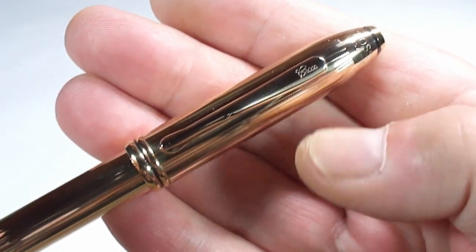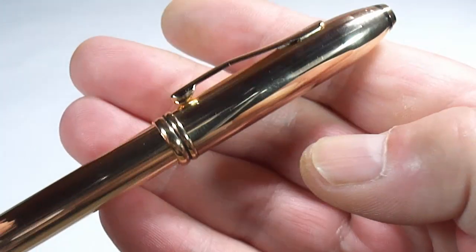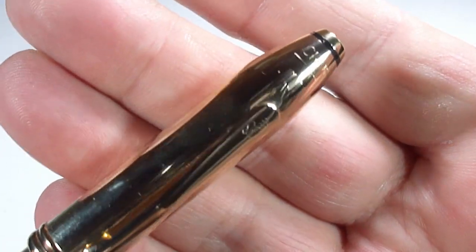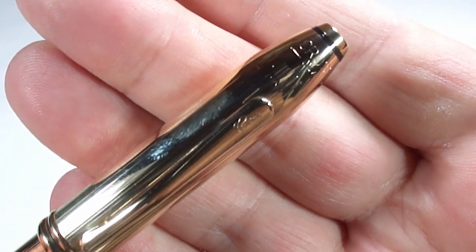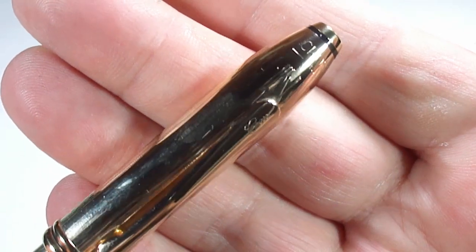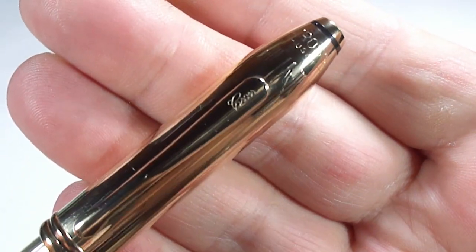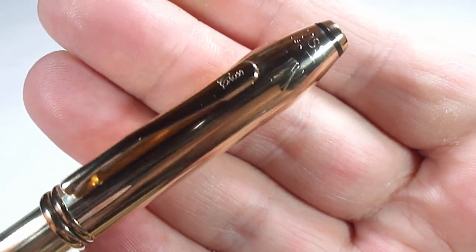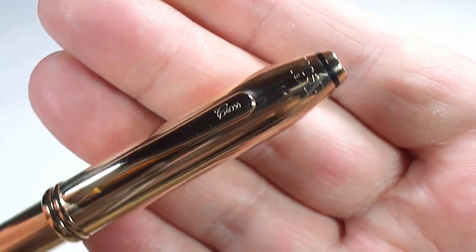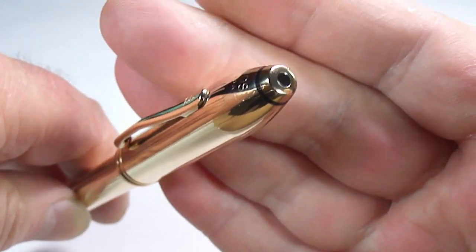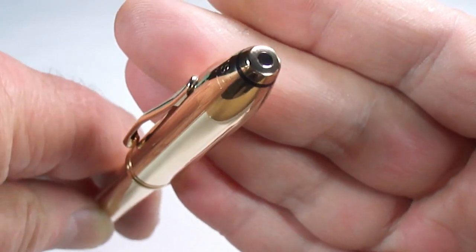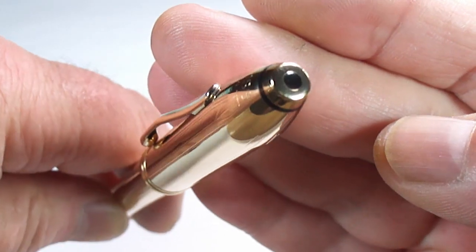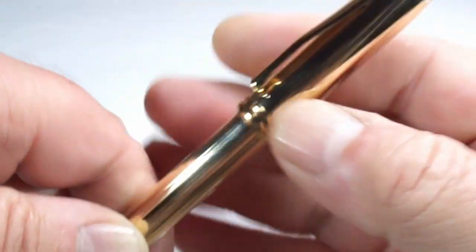To the very top it reads Cross, and just underneath it has USA. So this one was made in USA. As we have in a lot of these Cross pens, to the very top we've got this little black inlaid section.